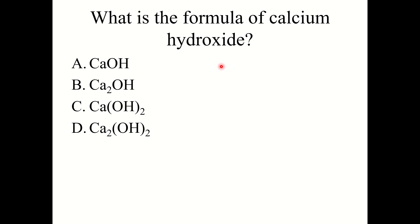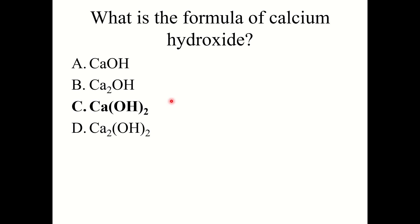Knowledge check: What is the formula of calcium hydroxide? The correct answer is Ca(OH)2. Calcium is in Group 2A, so its charge is +2. Hydroxide is OH⁻, so when you apply the criss-cross rule, you get Ca(OH)2 as the correct formula.